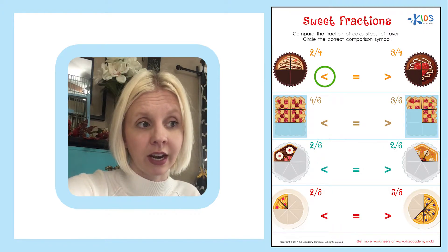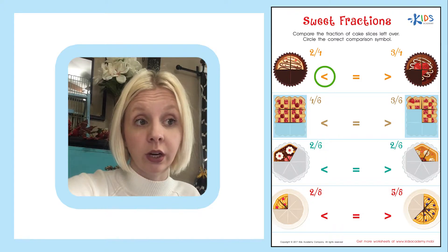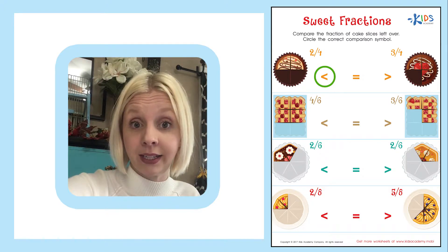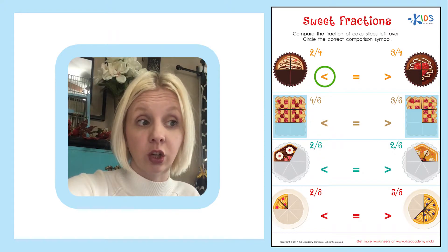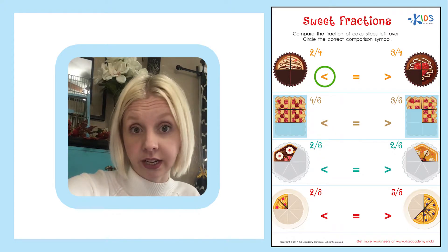We're going to go on down to the next one. Looks like the next one is some pie. We're going to decide which one of these two pies has the most. The first one has four-sixths, which means there's four pieces out of six left over.